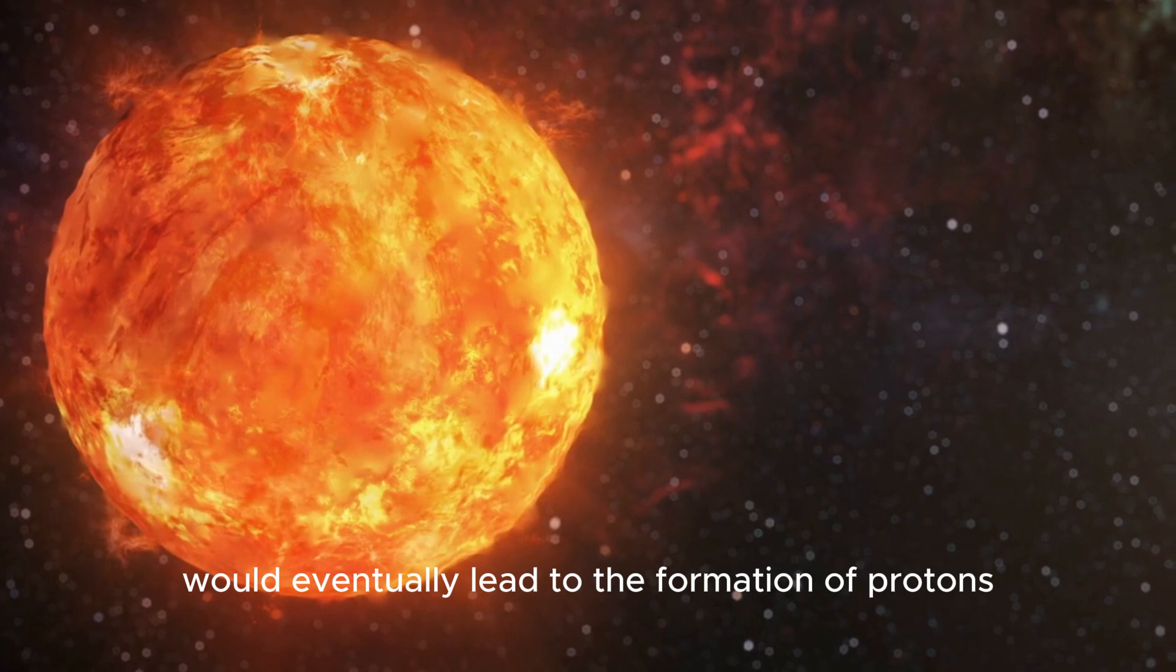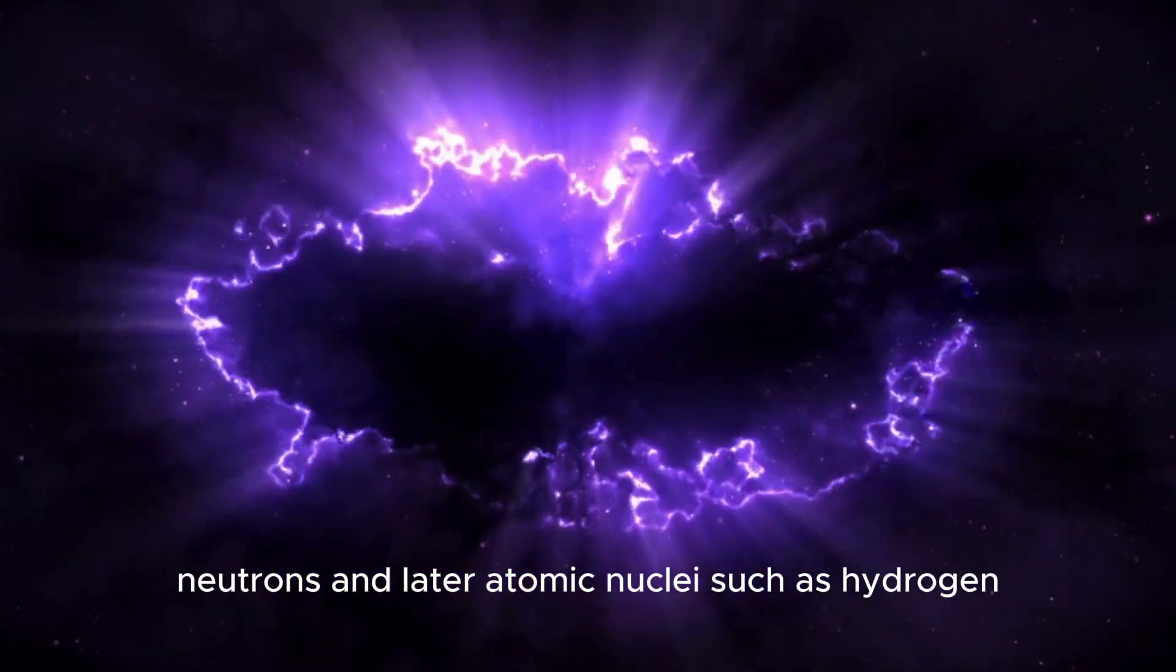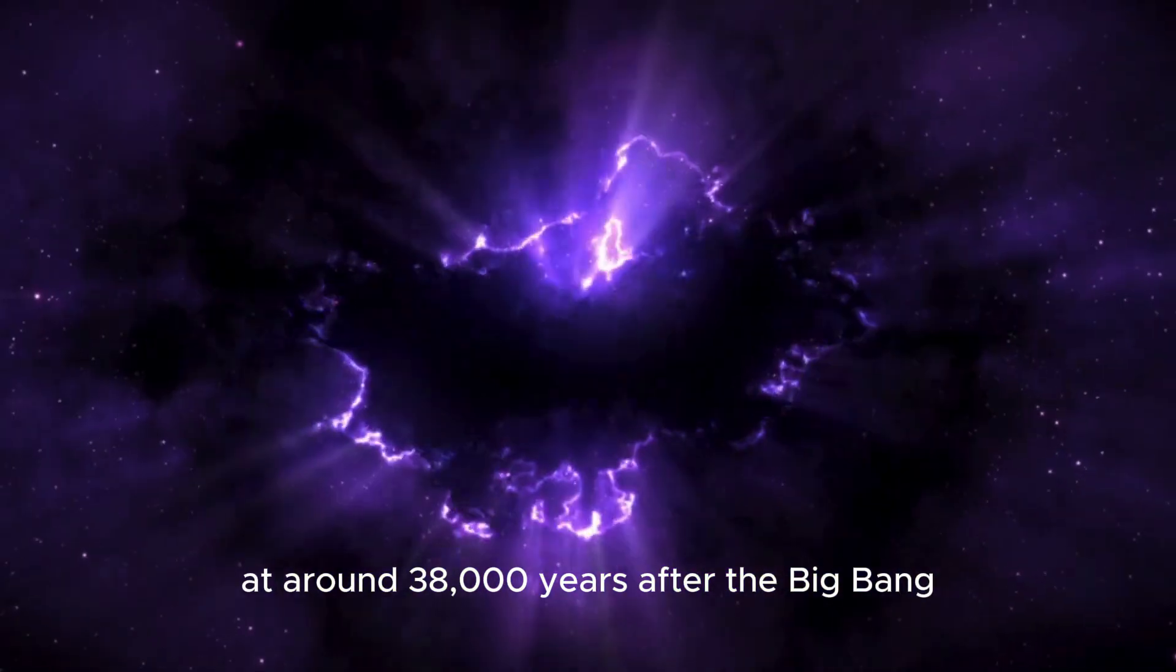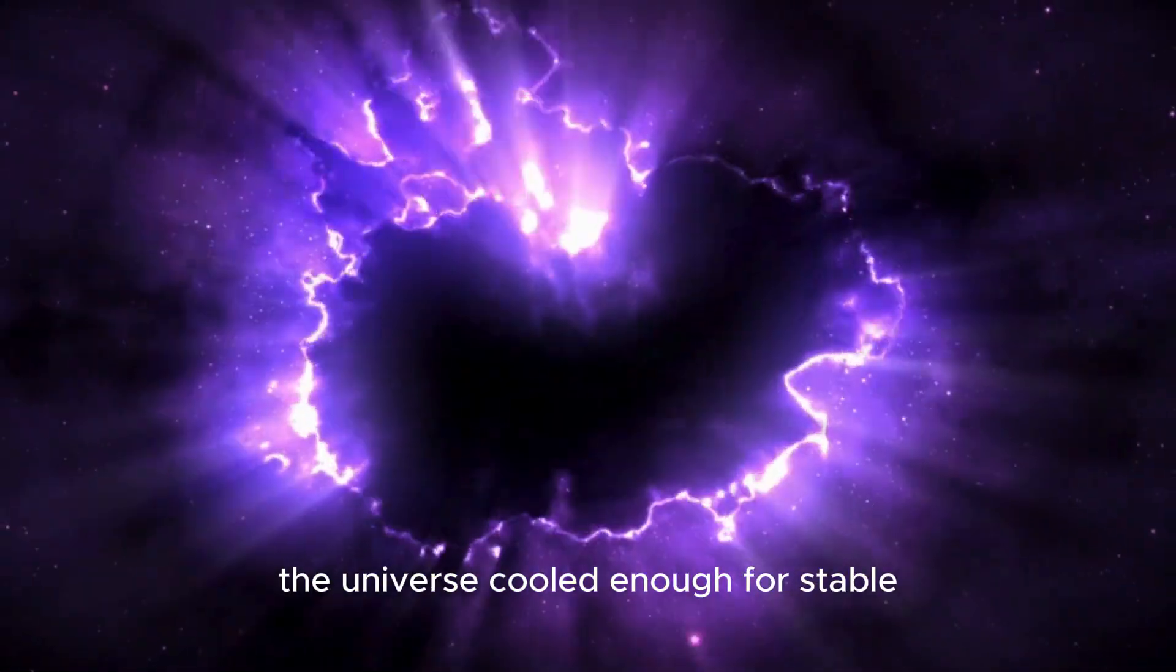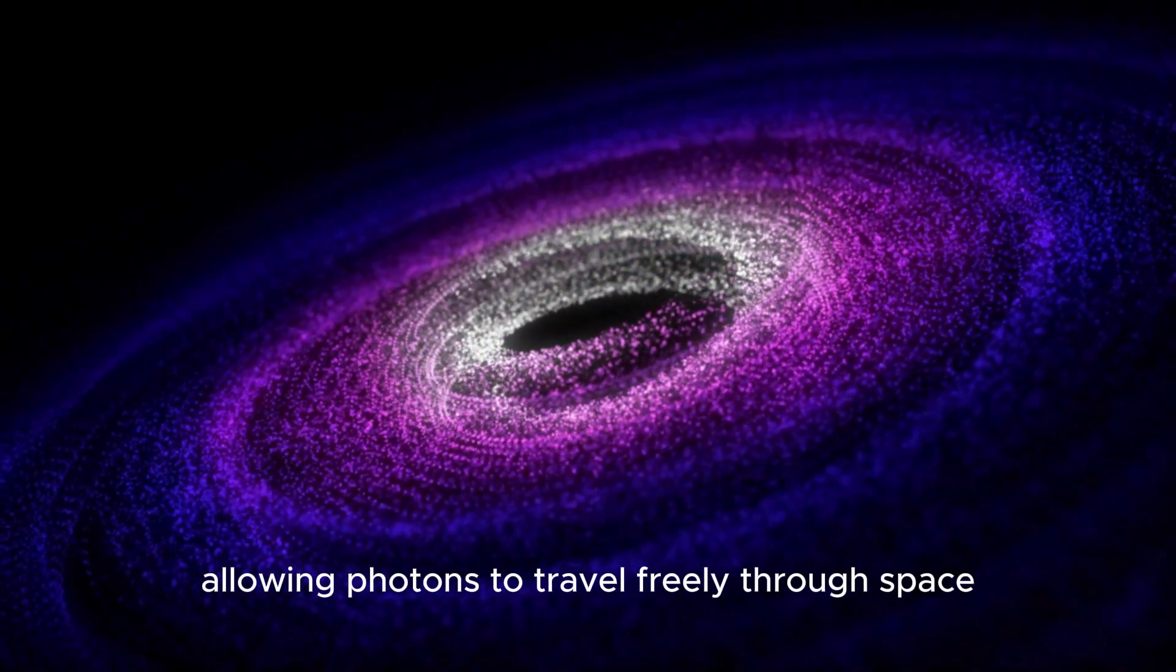These conditions would eventually lead to the formation of protons, neutrons, and later atomic nuclei such as hydrogen, helium, and lithium. At around 38,000 years after the Big Bang, the universe cooled enough for stable neutral atoms to form, allowing photons to travel freely through space.